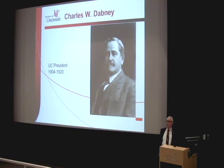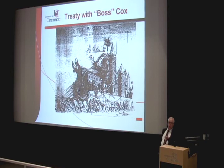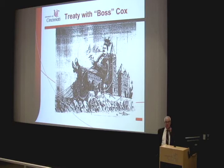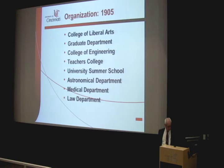Dabney's 16-year term, in comparison to his predecessor, was a golden age for the University of Cincinnati. Before agreeing to take the job, Dabney went to an Over-the-Rhine bar to meet with George Cox, known as the boss of Cincinnati. He told Cox that if he accepted this position, he wanted no political interference. Cox agreed that if Dabney took the position, he would leave politics out of any decisions governing the University of Cincinnati — and history indicates that, by and large, Cox kept his word.